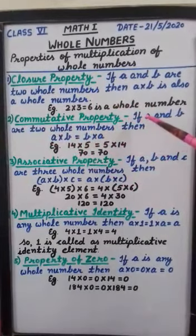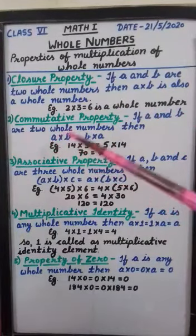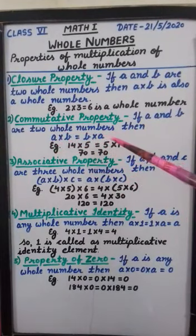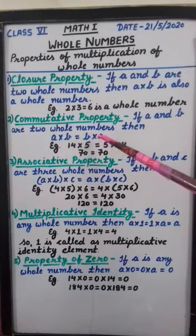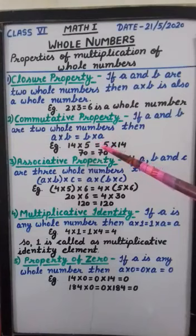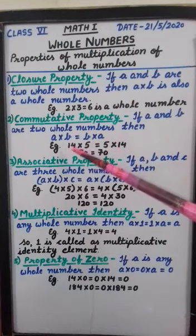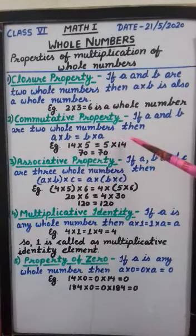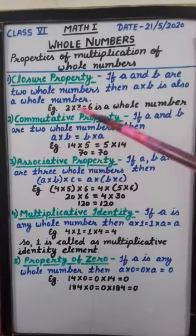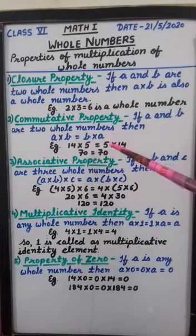Coming to the second property: Commutative property. If A and B are two whole numbers then A multiply by B is equal to B multiply by A. That means if we interchange the numbers, the result will be the same. For example, fourteen multiply by five is same as five multiply by fourteen — both equal seventy. So commutative property is true for multiplication.